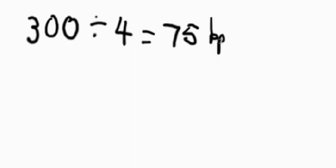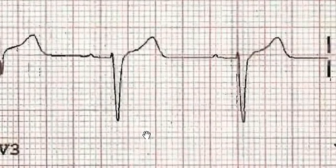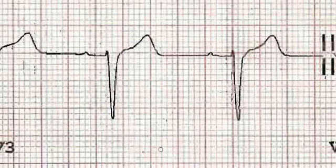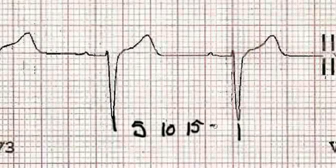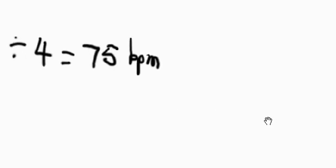A slightly more refined way of doing that is to take the number of little squares, each being one millimeter. We take from that point to that point — the R-R interval — and count the number of little squares. Each big square has five little squares, so counting: five, ten, fifteen, twenty, plus one, plus another one — approximately 22 in all.